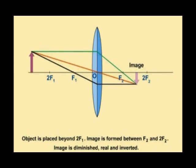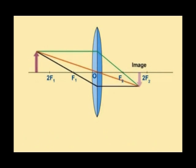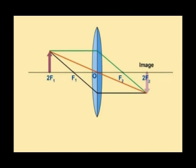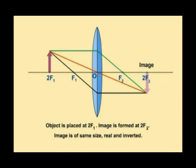If we move the object closer to the lens you'll see that the image changes size. At 2F the image is now formed at 2F on the other side and you'll notice that the image and the object are the same size. So the magnification is 1.